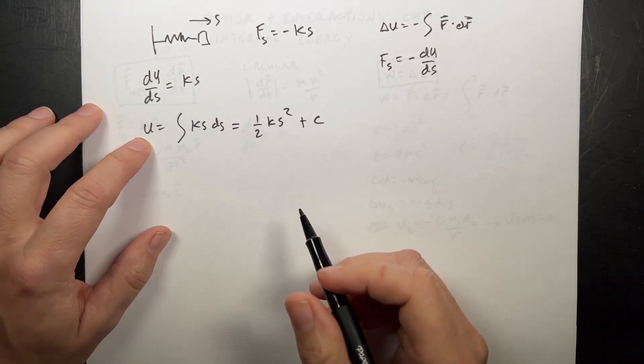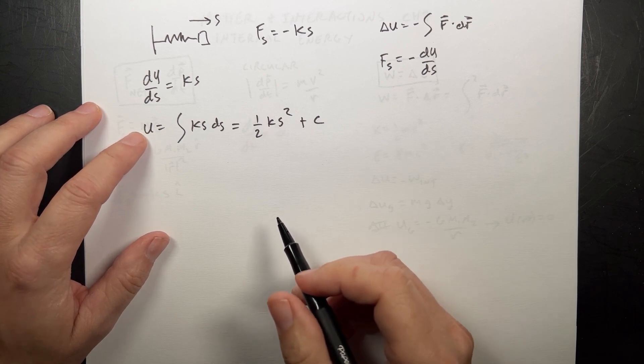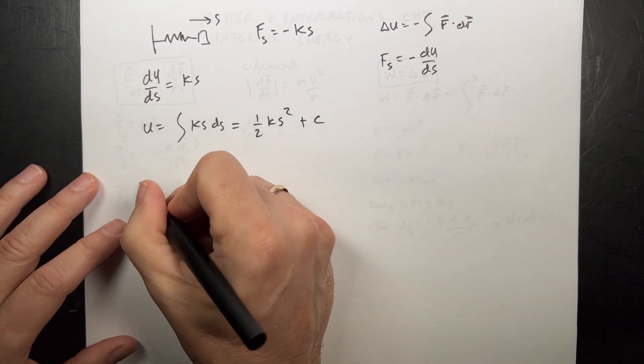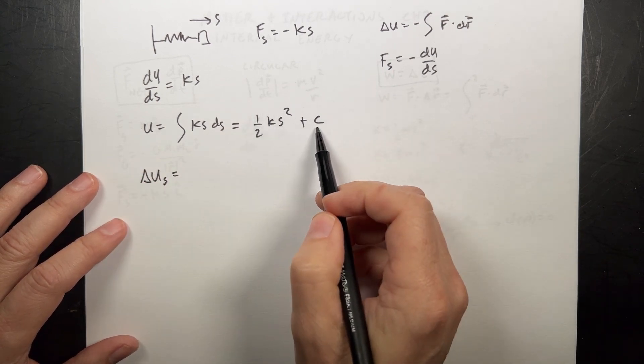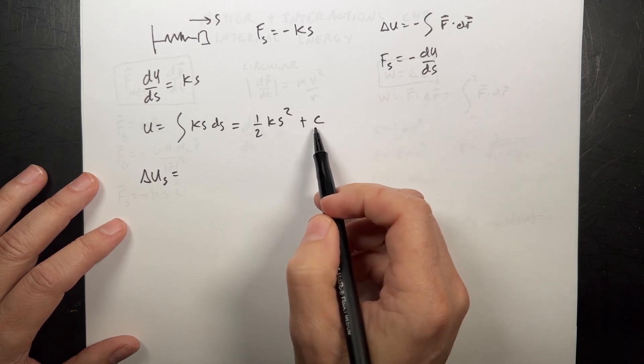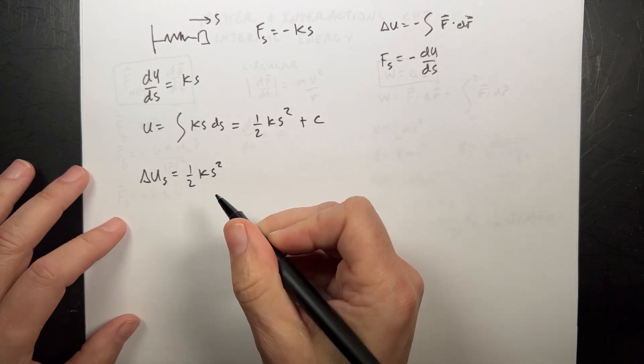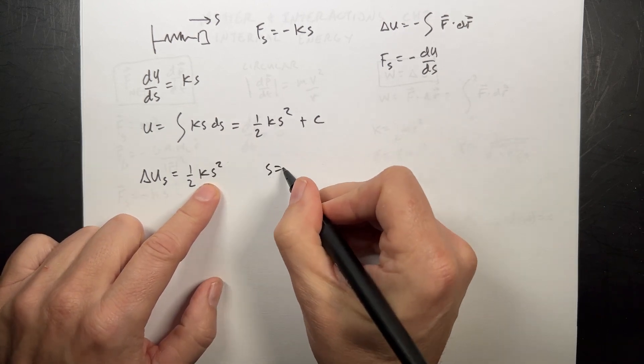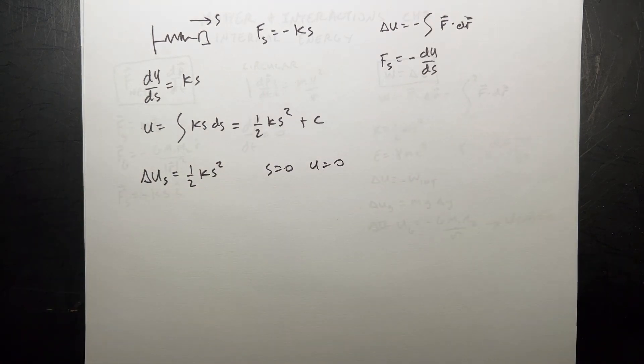We don't really care about the potential energy of the spring usually. What we care about is the change in potential. The constant goes away because it's in both terms. So the change in potential is one half ks squared. When s equals zero, u equals zero. That's the potential energy due to the spring. It's super useful. We use it in a lot of different places.